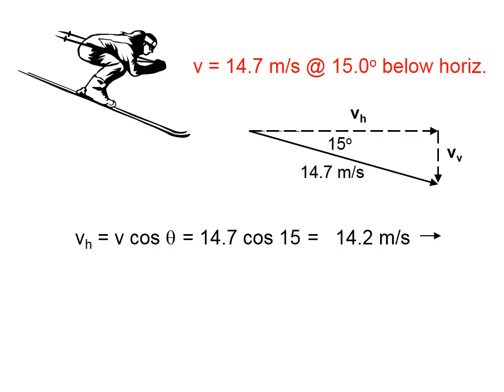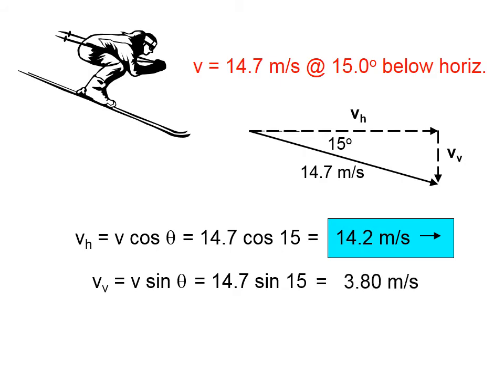Again, this is a vector, so we have to put a direction. The vertical component will be found - you can see from the diagram that the vertical component is opposite the angle. So whenever you want to find the opposite leg of the triangle, you use the sine. So 3.80 meters per second, and again, that's a vector downward.